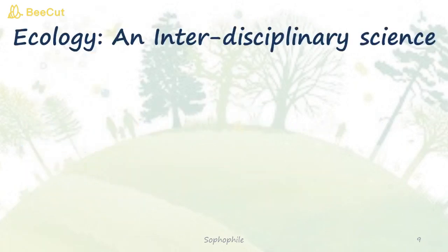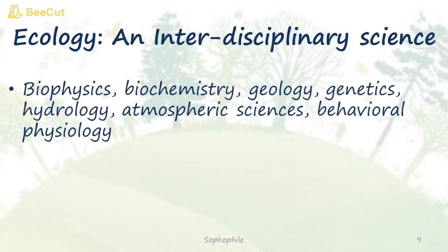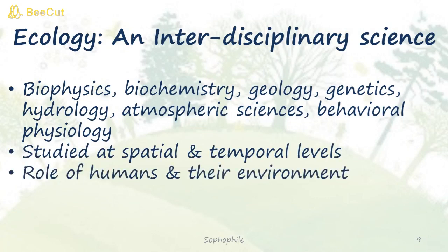Why is ecology called an interdisciplinary science? Because to study ecology, one must have prior knowledge of different aspects of science — biophysics, biochemistry, geology, genetics, hydrology, atmospheric sciences and even the behavioral physiology of animals. Ecology is studied at spatial and temporal levels, which we are going to study in later videos, along with the role of humans and the environment.